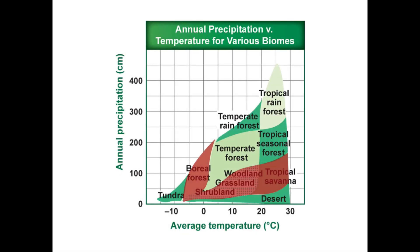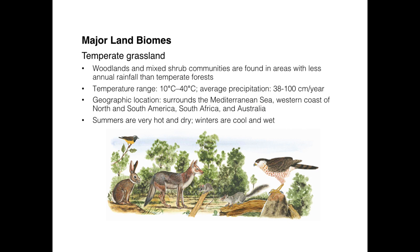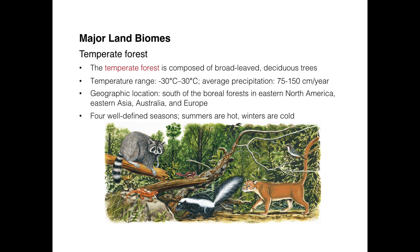Moving up to temperate forest and tropical seasonal forest, rainfall is now 38 to 100 centimeters per year. These biomes are found around the Mediterranean Sea, the west coast of North and South America, South Africa, and Australia. Remember that at a given latitude — say 40 degrees — you'll find complementary biomes both north and south of the equator. Australia, though famous for its deserts, also has temperate grasslands supporting abundant wildlife.